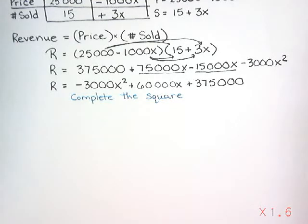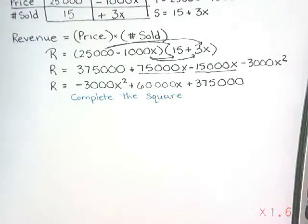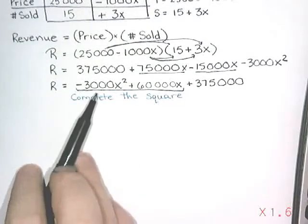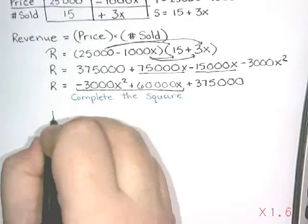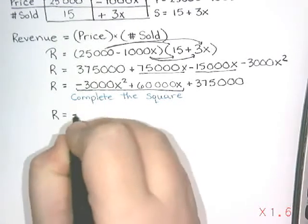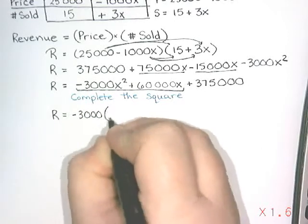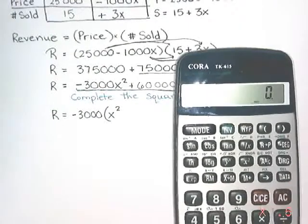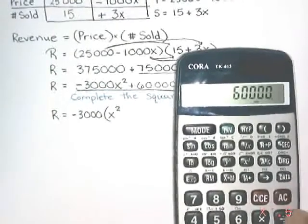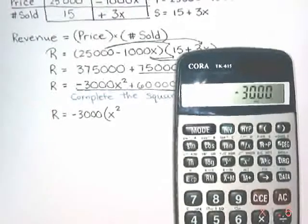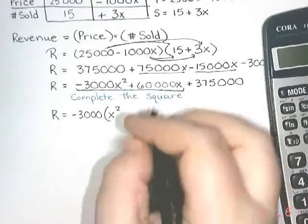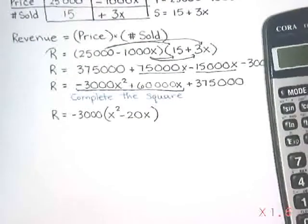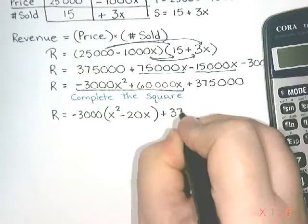To complete the square, we group together everything that has an x and take out whatever is in front of the x squared. So we factor out the negative 3,000. Inside the bracket I have x squared, and then 60,000 divided by negative 3,000 gives me negative 20, so there will be a negative 20x left behind. And then we still have that 375,000 at the end.